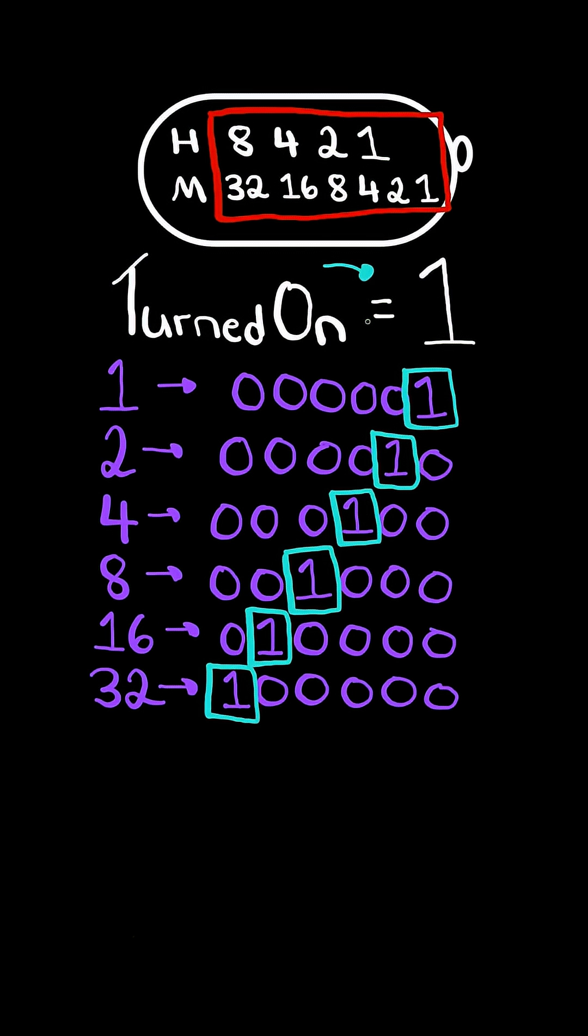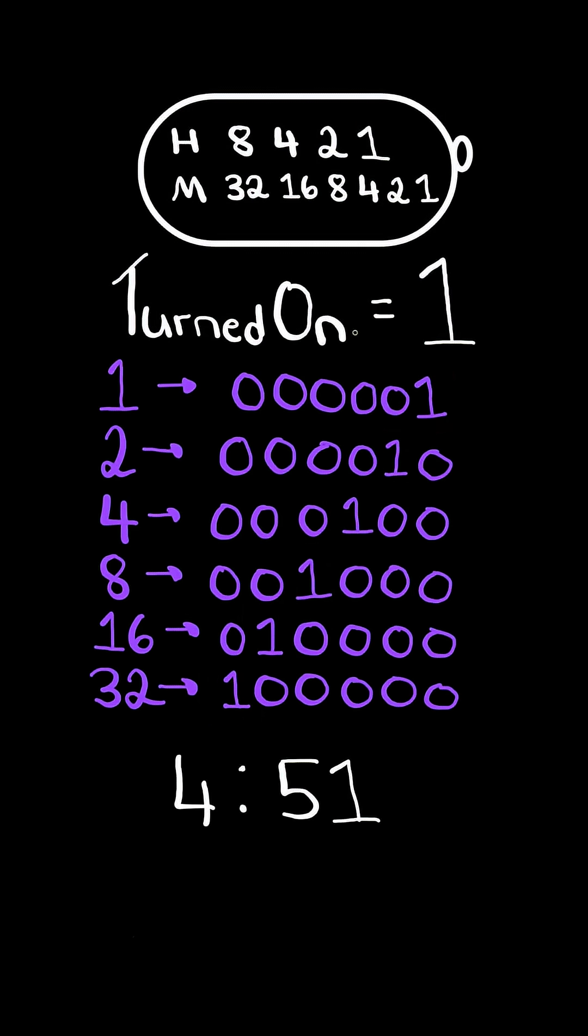The number of bits set will correlate to the number of LEDs needed to produce a time. For example, let's go back to 4:51. It needed a total of 5 LEDs to be turned on to produce this time.